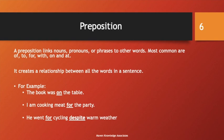The most common prepositions are: of, to, for, with, on, and at. It creates a relationship between all the words in a sentence. For example, 'The book was on the table' — connecting book with table. 'I am cooking meat for the party' — connecting cooking meat with party. 'He went for cycling despite warm weather.' So it links all the words in a sentence to make it meaningful.